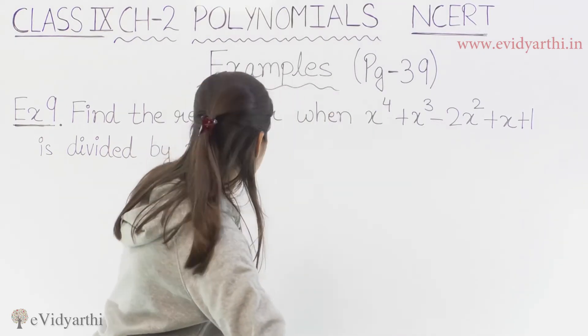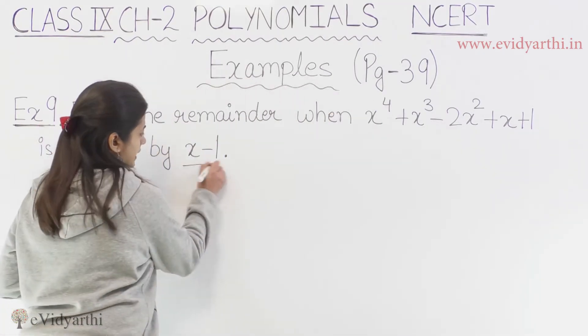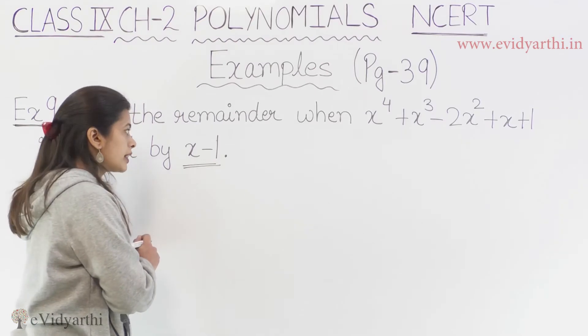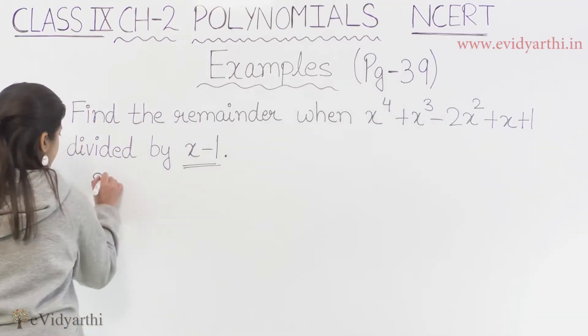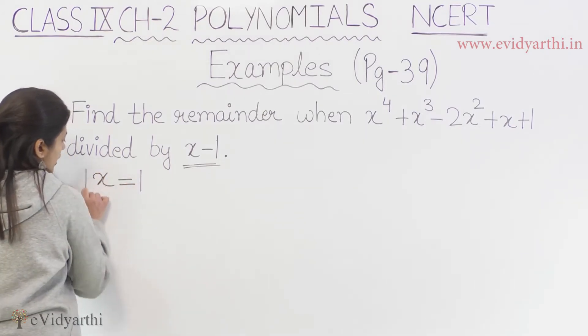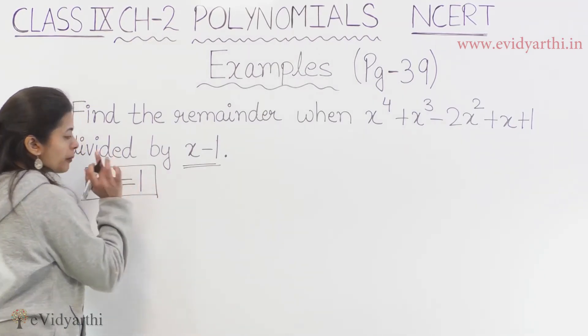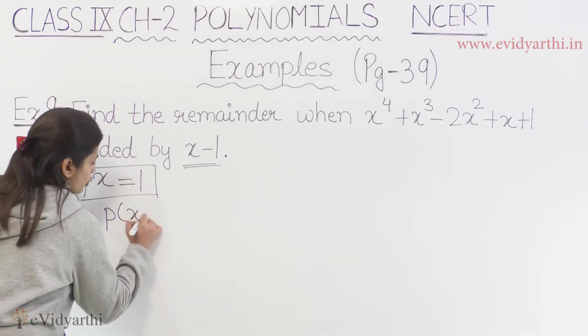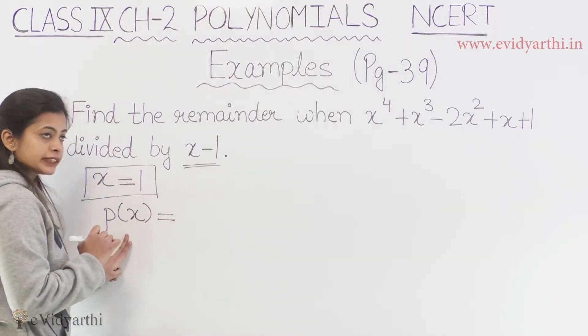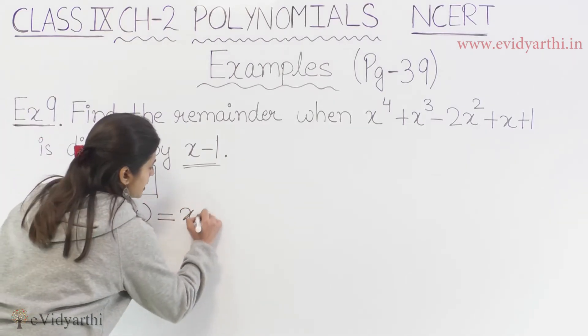Hame is portion mein kya given hai? We are given x minus 1. So yaha se hamara a nikal jayega. We will get x equals to 1. So hamara agar hum a ki baat karay, tho hamare paas a aa gaya 1. Ab hamara jo polynomial hai, usko ek labeling kar dete hai aur usko likhna hai sabse pehle.